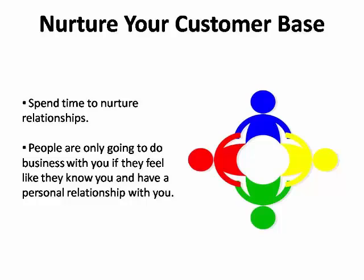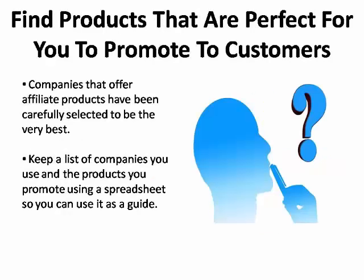Share details about your life and open up about your family, yourself, and other personal details. This is the type of thing people love to read about and will make them more open to buying from you. When you reach out to companies offering affiliate products, you're sure to find products that are perfect to promote to your customers, because these sites have been selected to offer products with a proven track record of sales. Keep a list of the companies you use and the products you promote using a spreadsheet — this will help guide your affiliate marketing campaign to continued success.